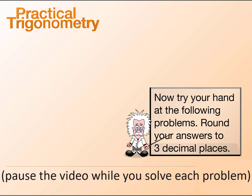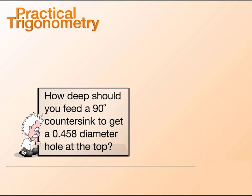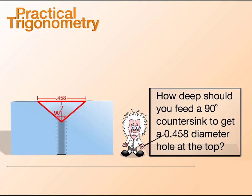Now, try your hand at the following problems. Round your answers to three decimal places. Pause the video while you solve each problem. How deep should you feed a 90 degree countersink to get a 0.458 inch diameter hole at the top?